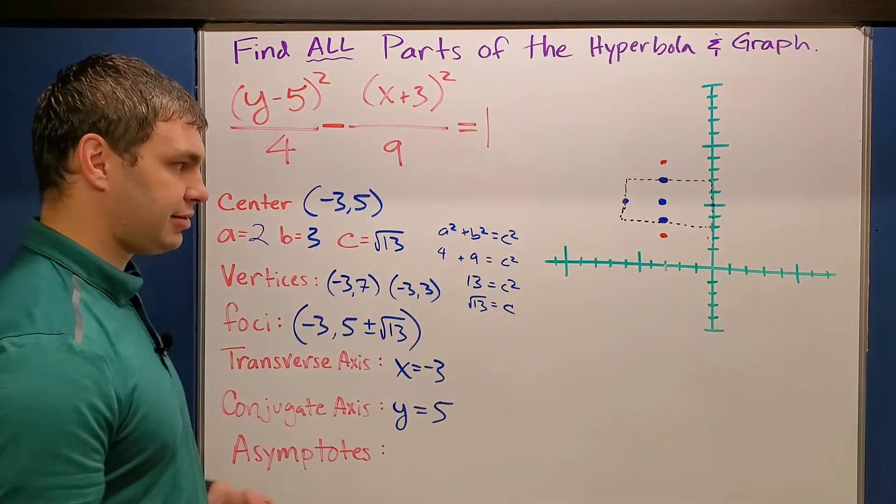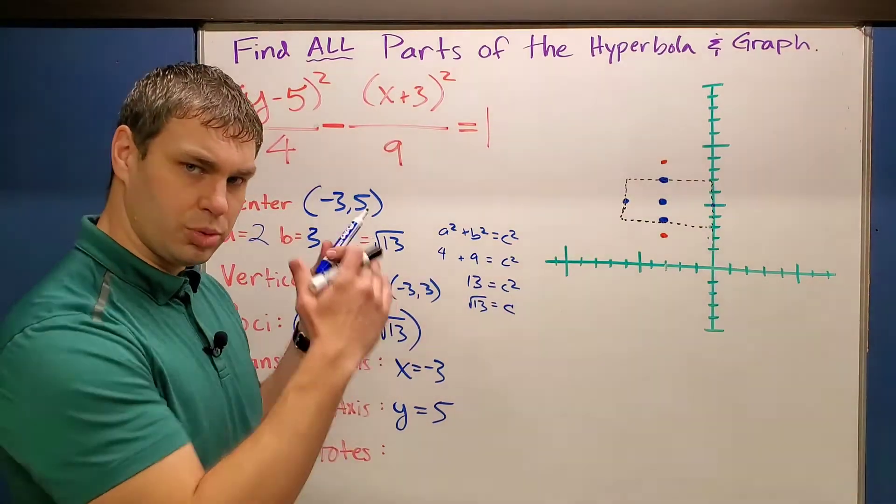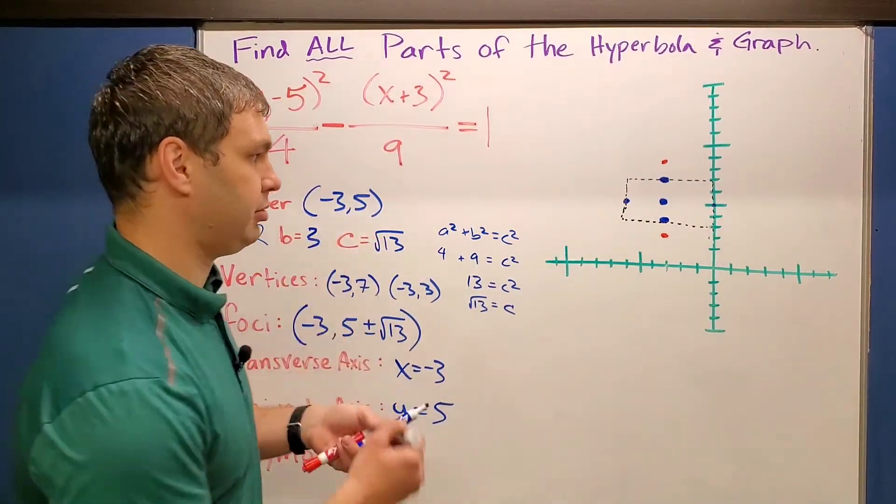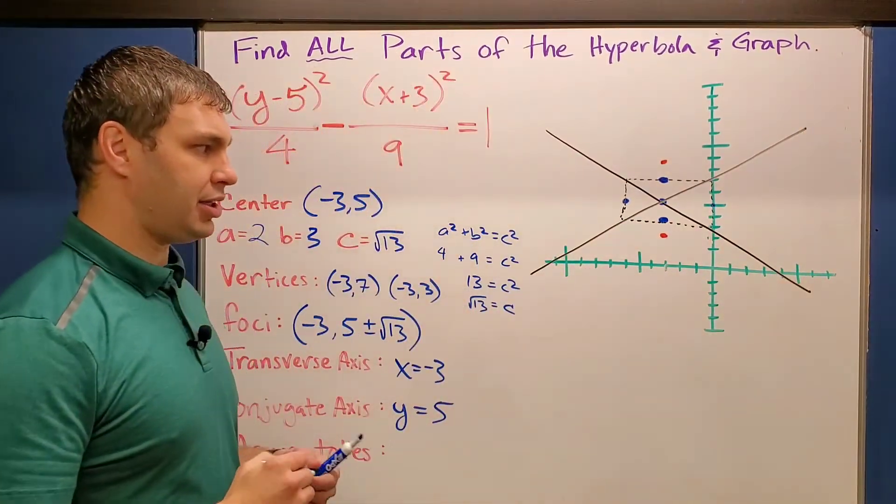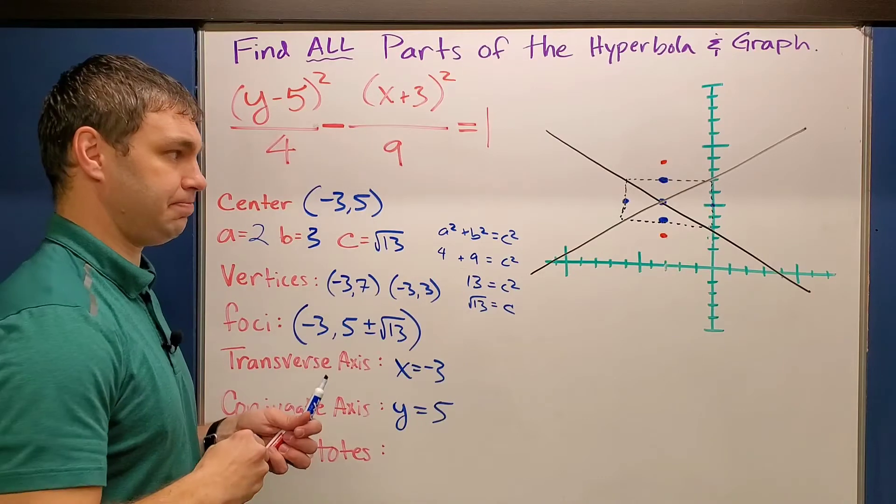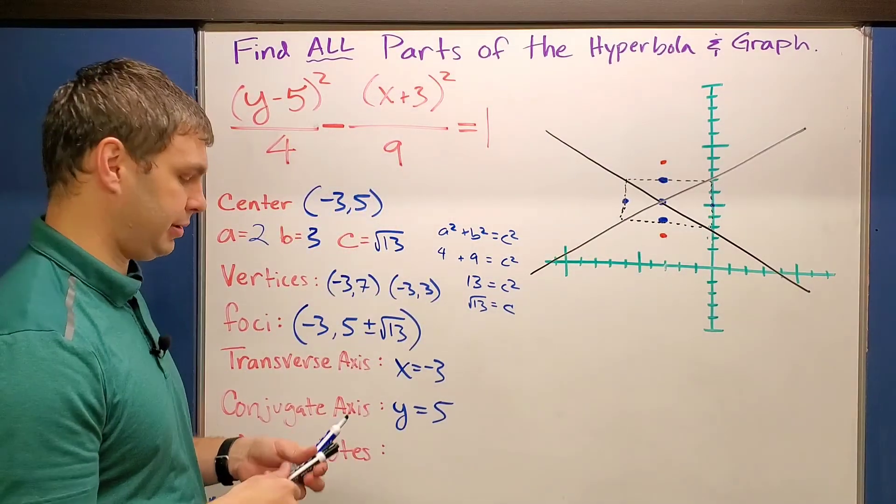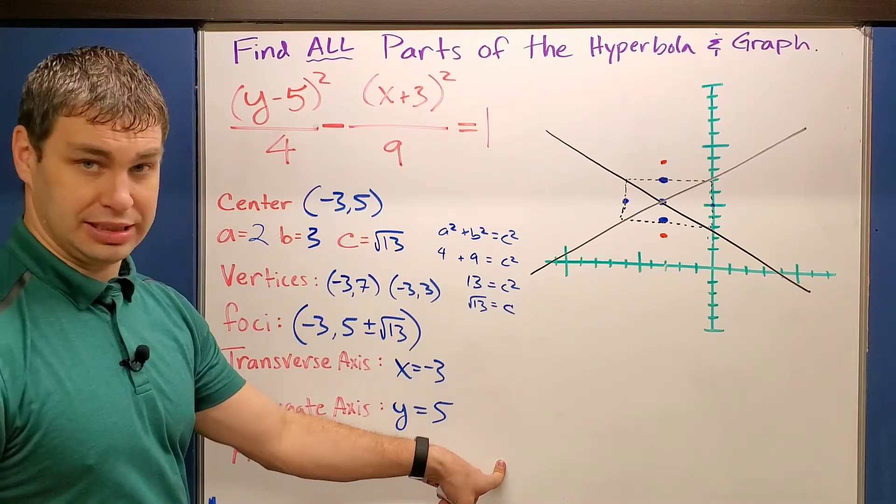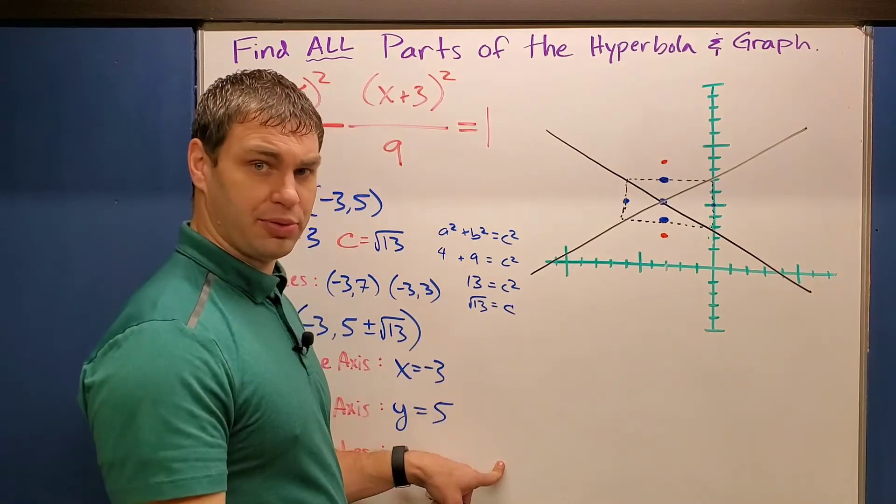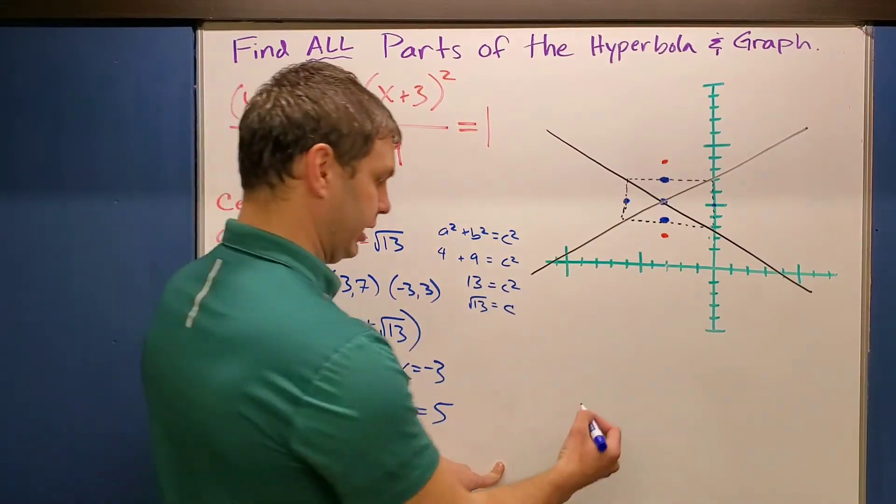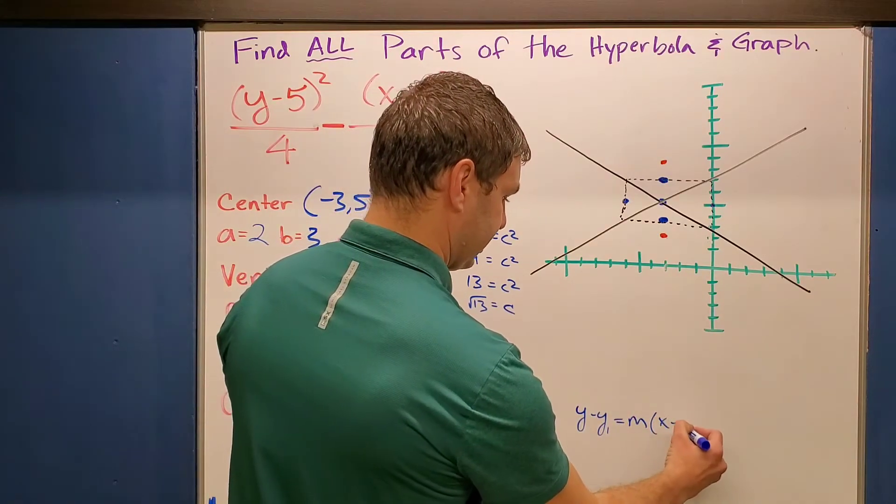And then lastly, to find those asymptotes, we're going to use that dotted box that I just made. And we're going to connect the corners with the centers and kind of keep going out. And what these asymptotes, it's going to help us kind of contain the branches of our hyperbola. But we have to come up with what the equation is for this. And one thing that might be helpful for you is to think point slope form, like you learned probably back in algebra one, right? Where it's y minus y one equals the slope times x minus x one.